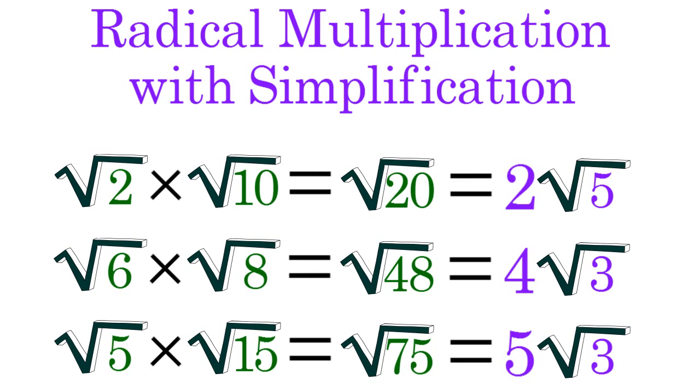Note that occasionally, when you multiply a pair of radicals and simplify, the result is an integer.